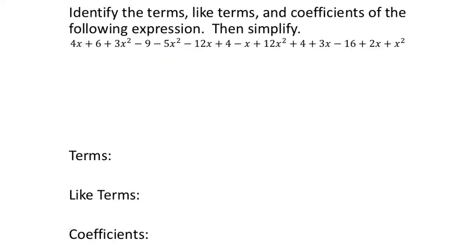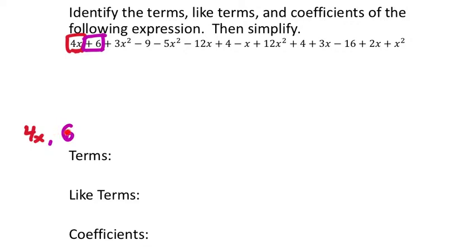Here's a big expression with 14 terms. We need to identify all the terms, then the like terms, then the coefficients, and simplify. I always start on the left and scan to the right. The first term I encounter is 4x. Some people like to box terms in. The next term moving right is positive 6. The next term is 3x squared. Then there's the constant negative 9.